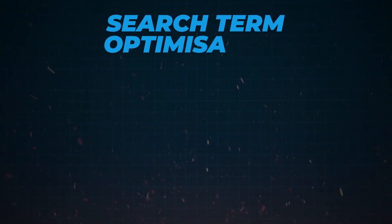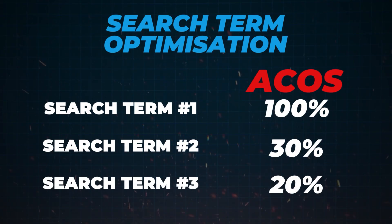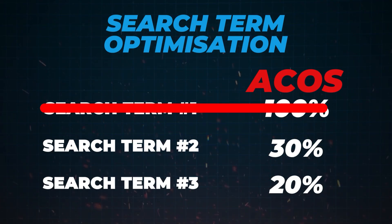By reducing the bid on that keyword, all you'd be doing is reducing the bid across all of those search terms — the poorly performing one, which is great, but also the highly performing ones, which is not ideal. So before you do any keyword bid optimization, you want to do search term optimization: identify those poorly performing search terms — in this example the one with 100% ACOS — remove that from the campaign, and by doing that you'll find the ACOS at keyword level will reduce a lot, without reducing the bid on the highly performing search terms.